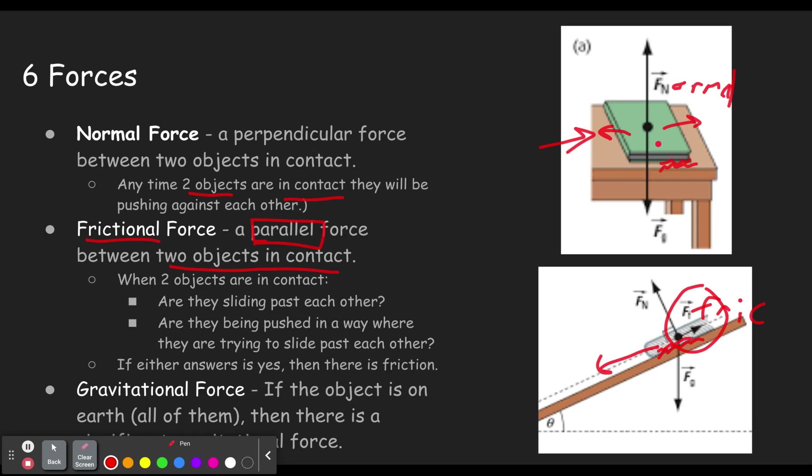Or if it was sliding down the slope, they would be trying to slow it down so it doesn't slide down quite as fast. So if you see an object on a slope like this, or something that's moving, like if this book was sliding across the table, whether it's speeding up or slowing down, if it's moving across a table, or across the surface,